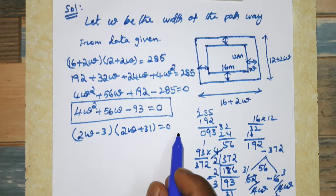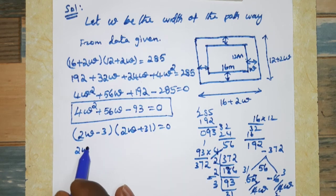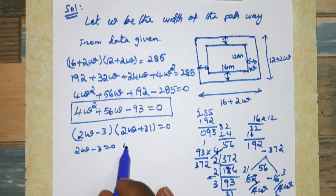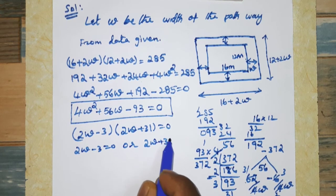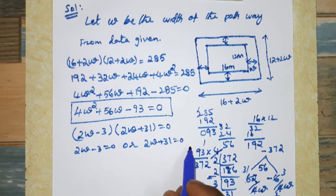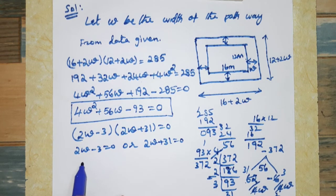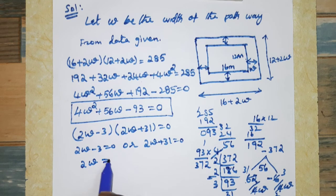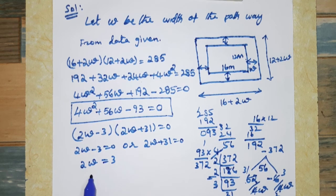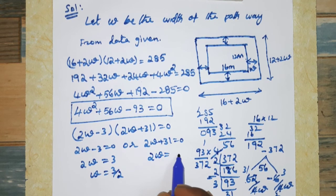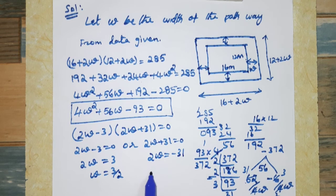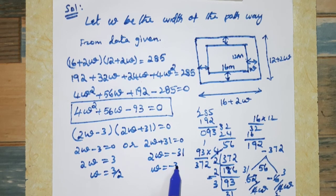Product of two factors equals zero, so either 2W - 3 = 0 or 2W + 31 = 0. From 2W - 3 = 0, we get W = 3/2. From 2W + 31 = 0, we get W = -31/2. The negative value is not possible.